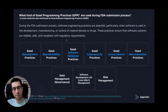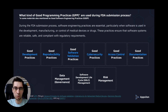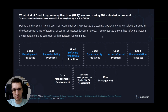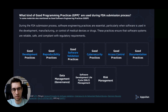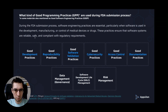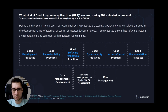What kind of good programming practices are used during the FDA submission process? In some materials you can also find the name good software engineering practices, so you can treat them as synonyms. During the FDA submission process, software engineering quality practices are essential, particularly when software is used in the development, manufacturing, or control of medical devices or drugs. Good programming practices contain practices related to development, reproducibility, software validation, cybersecurity, access control, documentation, data management, software development life cycle, and risk management.